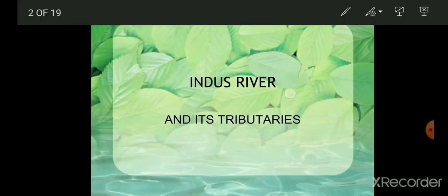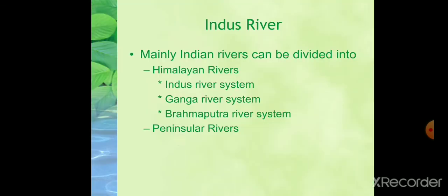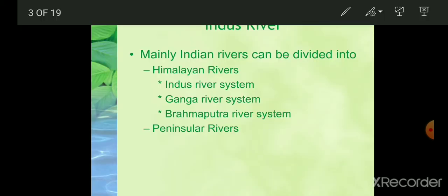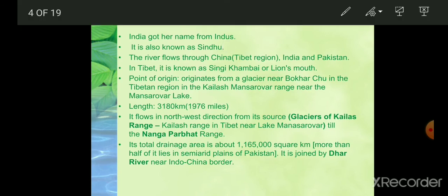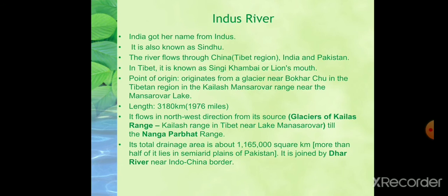Let's get on to today's topic: Indus River and its tributaries. Indian rivers are mainly divided into Himalayan rivers and peninsular rivers. The Indus River system, Ganga river system, and Brahmaputra river system are the three main river systems of Himalayan rivers. India got her name from the Indus, and the Indus Valley Civilization flourished around this river. It is also known as Sindhu. The river flows through China, India, and Pakistan. In Tibet it is known as Sengge Khabab, or the Lion's Mouth.